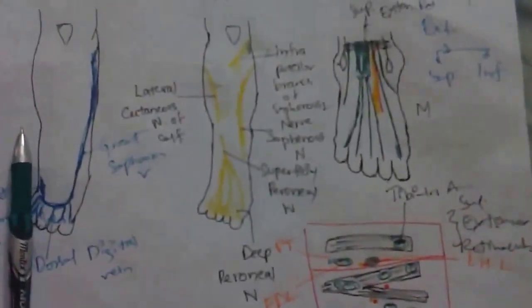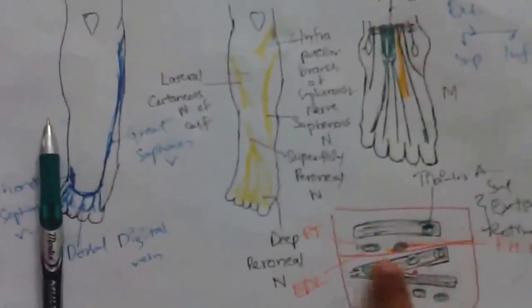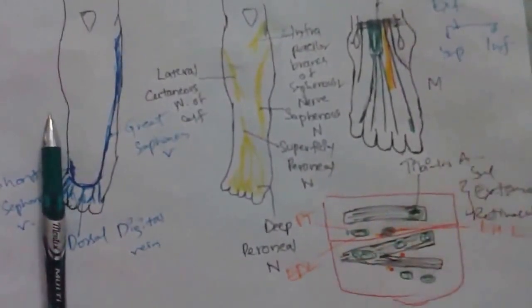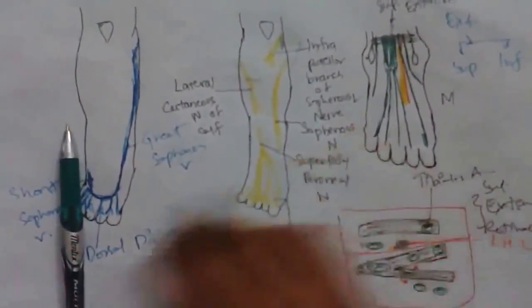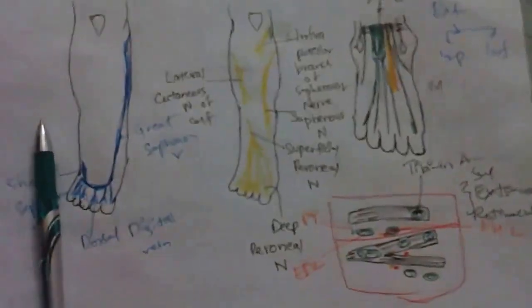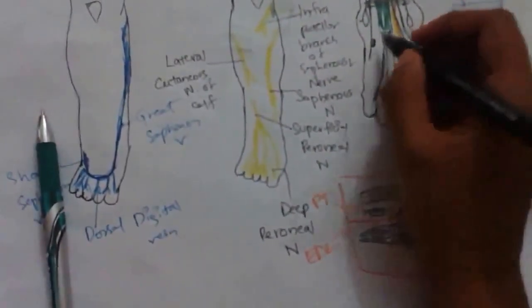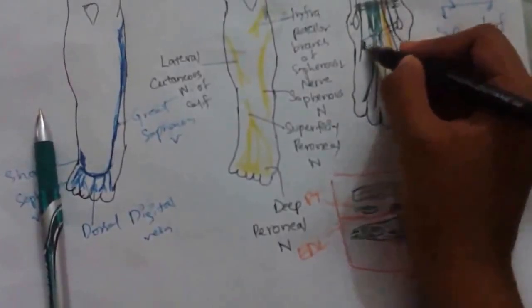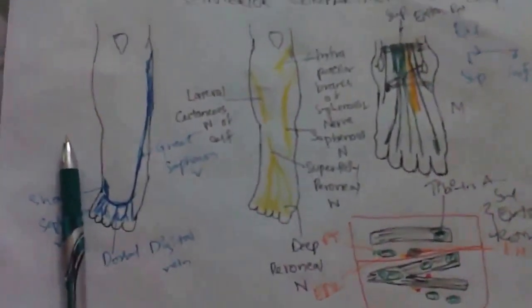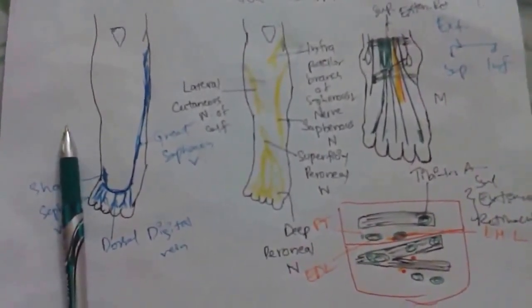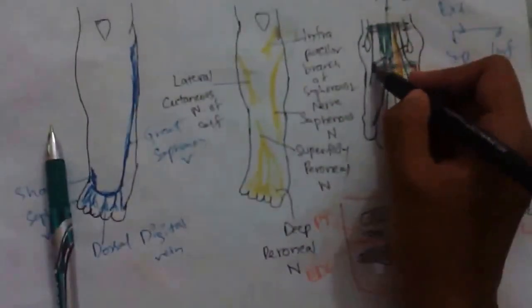Now for the inferior extensor retinaculum: it has two parts and is Y-shaped. The stem of the Y is attached to the anterior part of the non-articular surface of the calcaneum. The upper band is attached to the medial malleolus, whereas the lower band is subcutaneous and continuous with the skin. The stem is attached to the calcaneum bone.